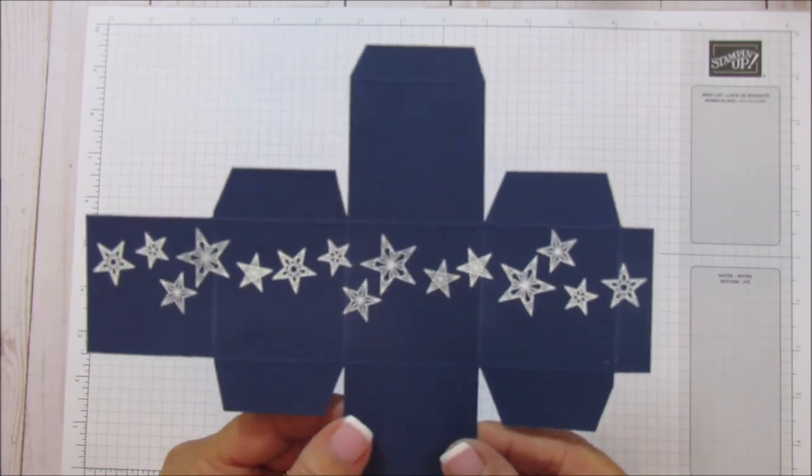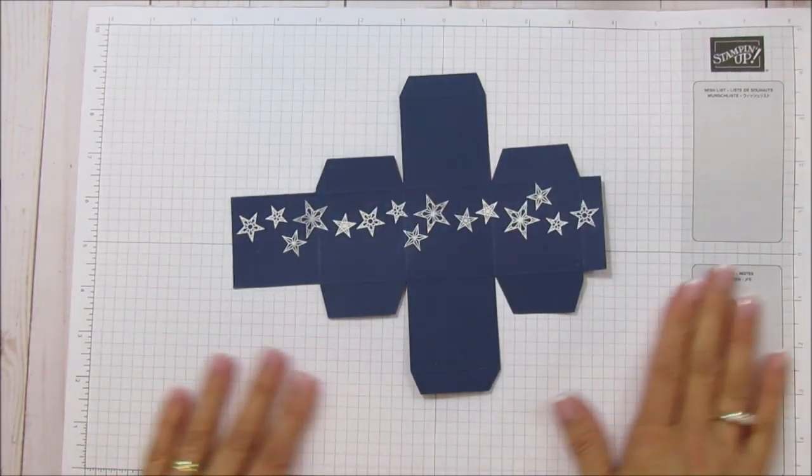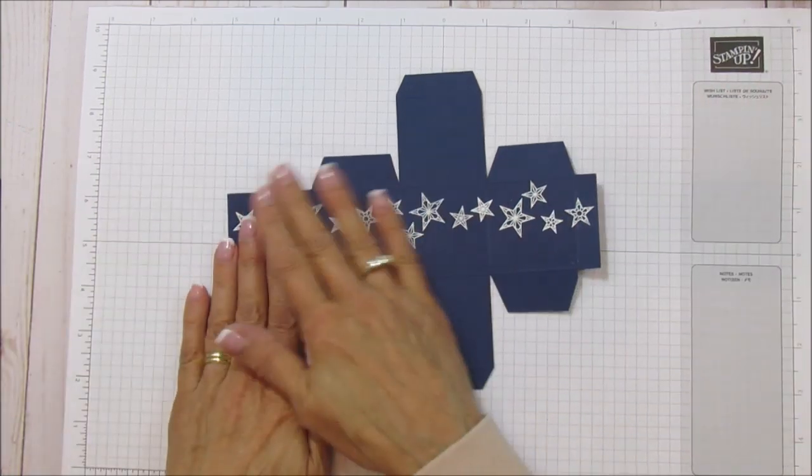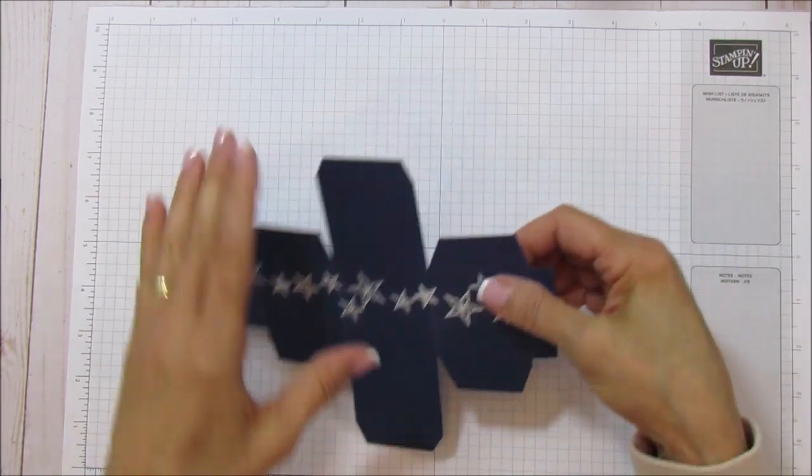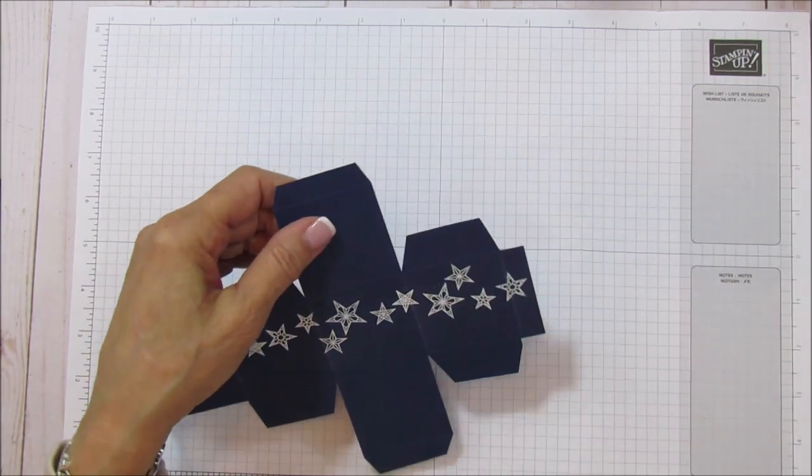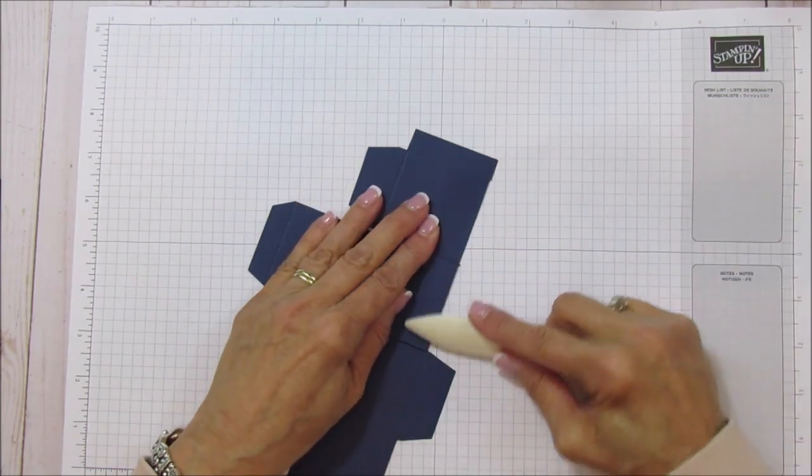Look how pretty they look, all embossed down there. I was thinking as I was embossing that I believe these are the colors for Hanukkah, so I think it would work even for Hanukkah. So let's go ahead and put this together. We'll sharpen all these score marks.